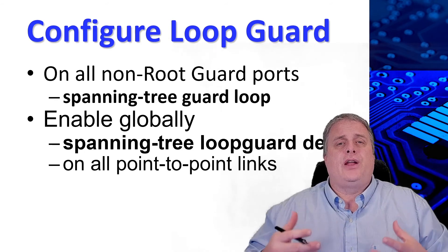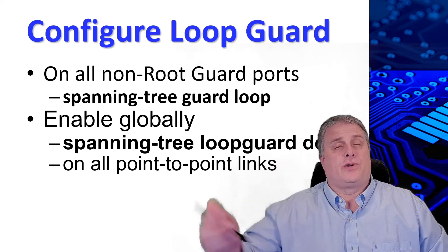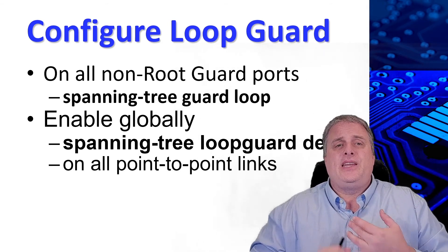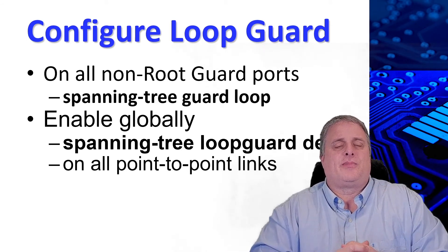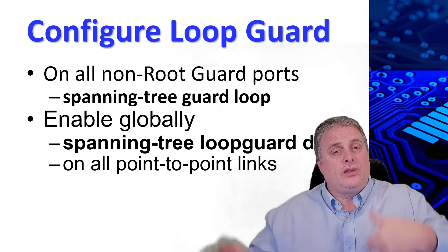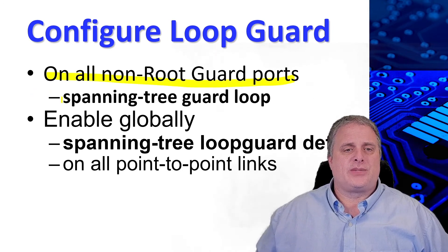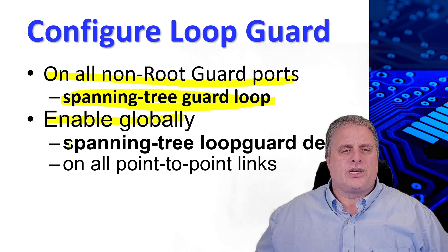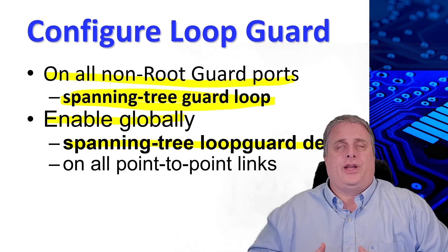A layer two loop is usually created when a spanning tree protocol port in a redundant topology stops receiving BPDUs and erroneously transitions to the forwarding state. The spanning tree protocol loop guard feature provides additional protection against layer two loops. If BPDUs are not received on a non-designated loop guard enabled port, the port transitions to a loop inconsistent blocking state instead of the listening, learning, forwarding state. Without the loop guard feature, the port would assume a designated port role and create loops. Loop guard is enabled on all non-root guard ports by using the spanning tree guard loop command. Loop guard can also be enabled globally by using spanning tree loop guard default, which enables loop guard on all point-to-point connections like serial connections.